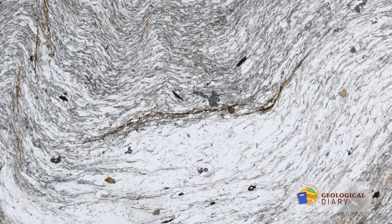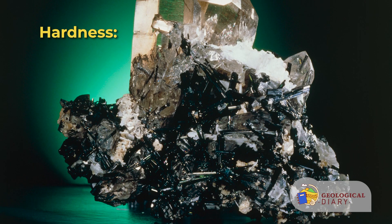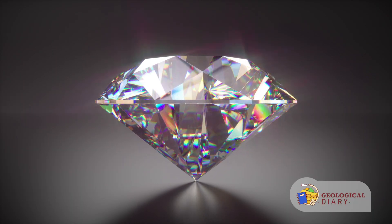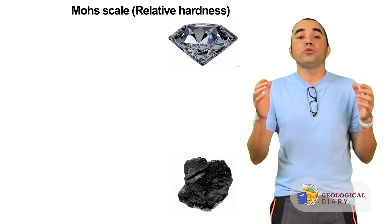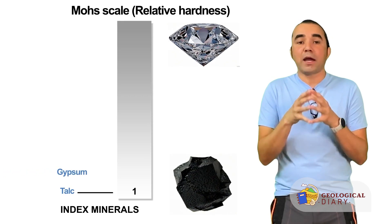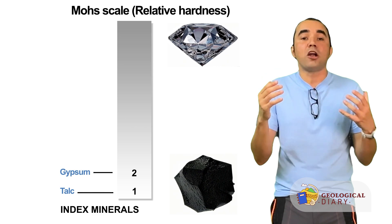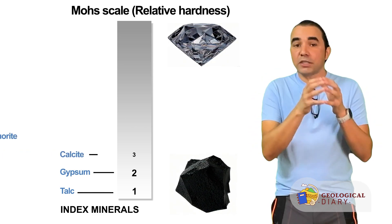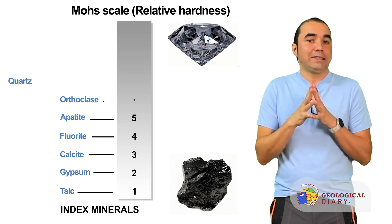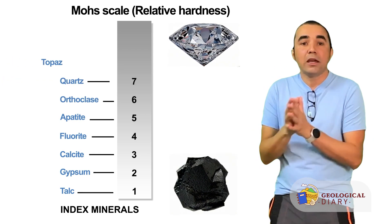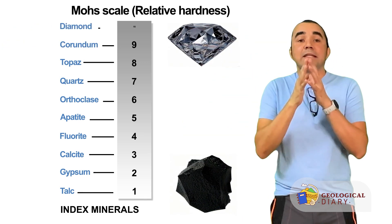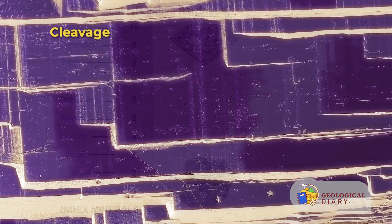Hardness is one of the most useful diagnostic properties of any given mineral — a measure of the resistance of a mineral to abrasion or scratching. A common method to assess hardness is to use the Mohs scale, introduced in 1812 by the German geologist and mineralogist Friedrich Mohs. It provides a useful, practical, qualitative assessment of mineral hardness based on its relative resistance to scratching. The scale goes from soft minerals starting at 1 to the hardest known mineral at 10, with the end members being talc at 1 as the softest and diamond at 10 as the hardest known mineral in nature.